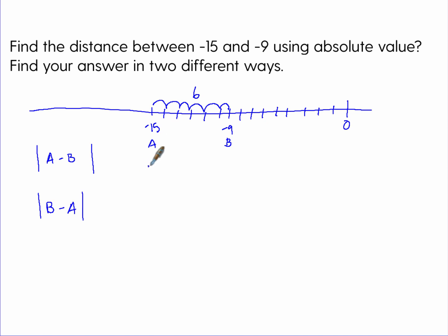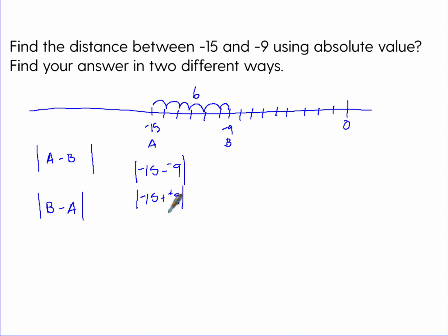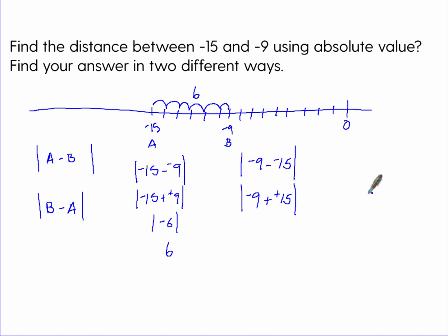First way: negative 15 minus negative nine, treating it as the absolute value. Treating subtraction as adding the opposite gives negative 15 plus positive nine, which is the absolute value of negative six — that's six. Second way: negative nine minus negative 15. Leave the first term the same and add the opposite: negative nine plus positive 15. You end up with 15 positives and nine negatives, giving positive six — just six, as we proved above.